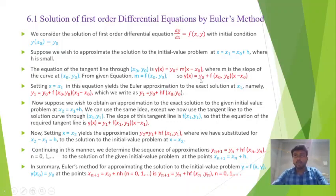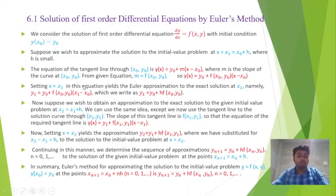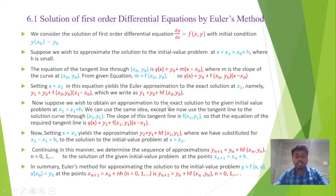So y(x) = y₀ + f(x₀, y₀)(x − x₀). Setting x = x₁ yields the Euler's approximation to the exact solution at x₁, namely y₁ = y₀ + f(x₀, y₀)(x₁ − x₀), which we can write as y₁ = y₀ + h·f(x₀, y₀). Now suppose we wish to obtain an approximation to the exact solution at x₂ = x₁ + h.